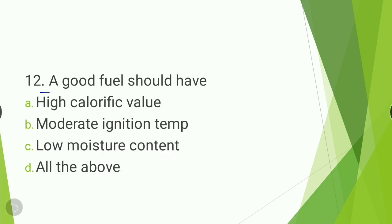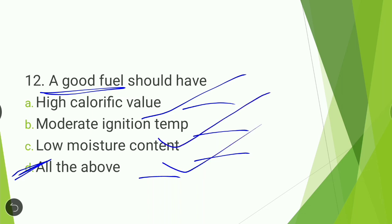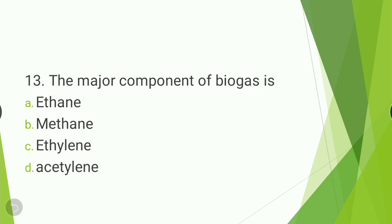Next question: a good fuel should have — high caloric value, moderate ignition temperature, low moisture content, or all of the above? The answer is all of the above. A fuel is considered good when it has high caloric value, moderate ignition temperature, and low moisture content.